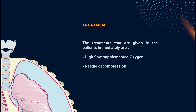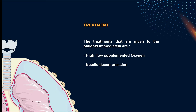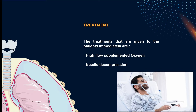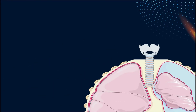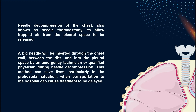The treatments given to patients with tension pneumothorax are high-flow supplemental oxygen and needle decompression. The patient should immediately be given a high concentration of supplemental oxygen to treat the hypoxemia, and pulse oximetry should be used to monitor oxygen saturation. Needle decompression of the chest, also known as needle thoracostomy, allows trapped air from the pleural space to be released. It equilibrates pressure between the pleural space and the atmosphere, and it is only indicated for tension pneumothorax.